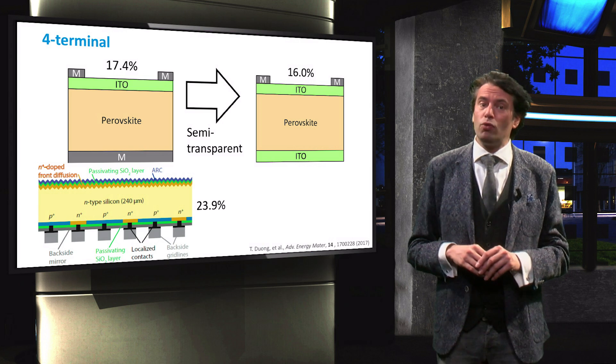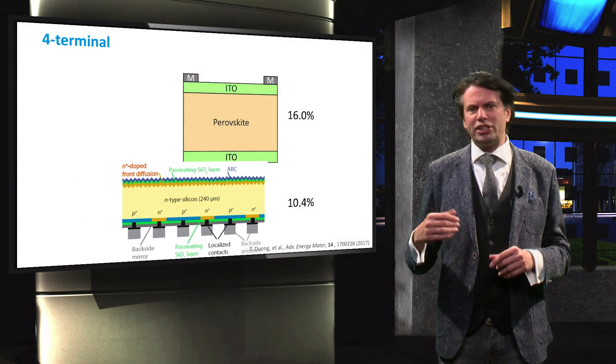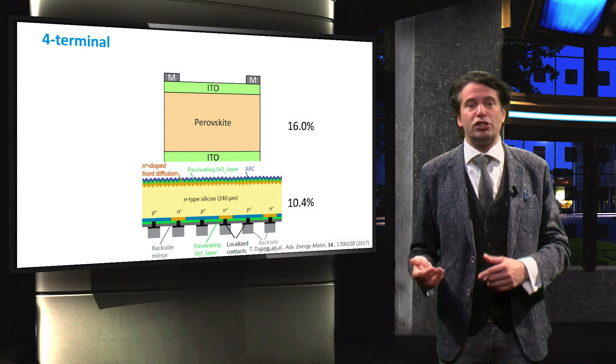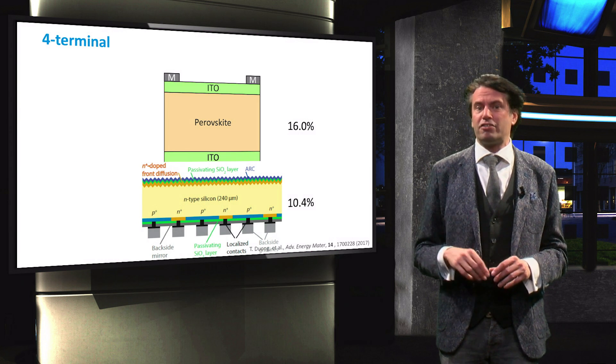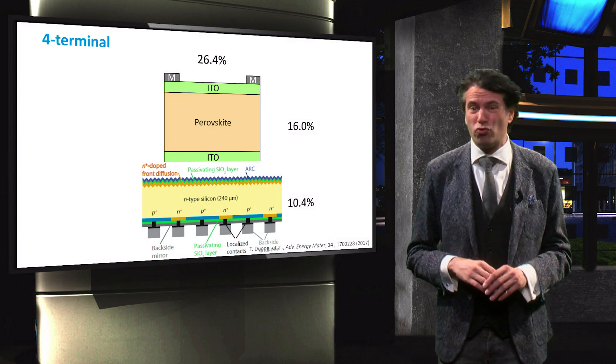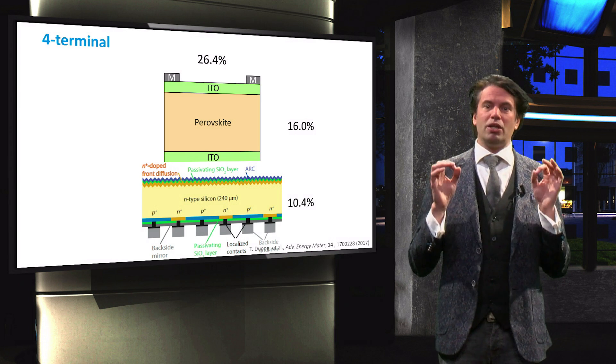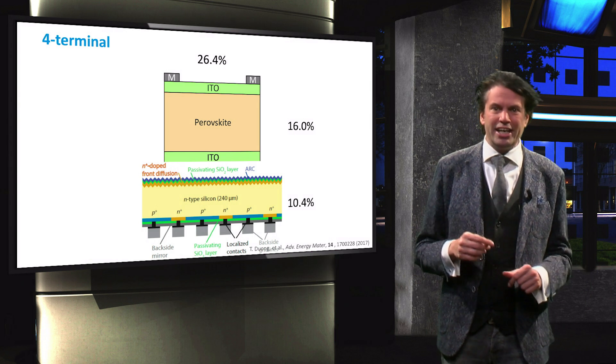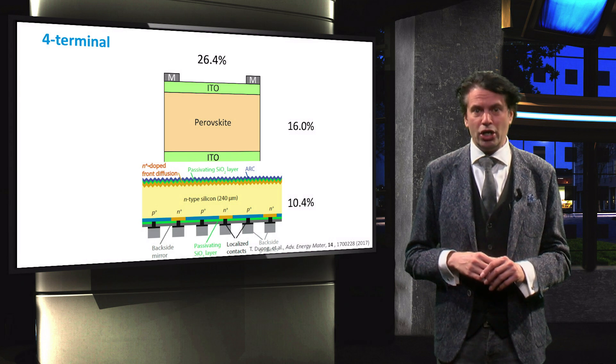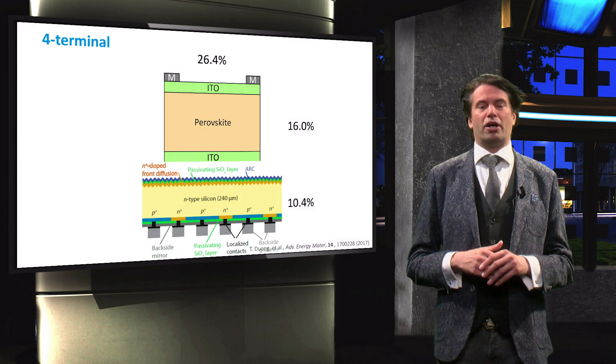The perovskite top cell was then stacked on top, which reduces the bottom cell efficiency to 10.4%. This results in a record device efficiency of 26.4%. The maximum possible efficiency for this device based on the current state-of-the-art technology is 30.2%, which also leaves some room for improvement.